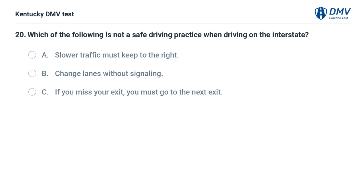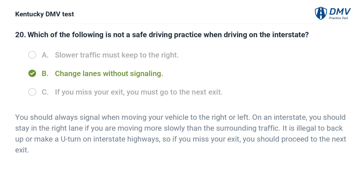Which of the following is not a safe driving practice when driving on the interstate? A. Slower traffic must keep to the right. B. Change lanes without signaling. C. If you miss your exit, you must go to the next exit. The correct answer is B, change lanes without signaling. You should always signal when moving your vehicle to the right or left. On an interstate, you should stay in the right lane if you are moving more slowly than the surrounding traffic. It is illegal to back up or make a U-turn on interstate highways, so if you miss your exit, you should proceed to the next exit.